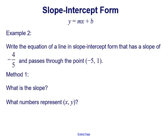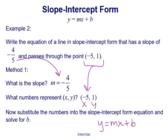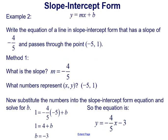Here's another example: write the equation of a line in slope-intercept form that has a slope of negative 4 fifths and passes through the point (negative 5, 1). Using the slope-intercept form equation, the slope is negative 4 fifths and the point (negative 5, 1) represents x and y. Substituting into y equals mx plus b, we get 1 equals negative 4 fifths times negative 5 plus b.